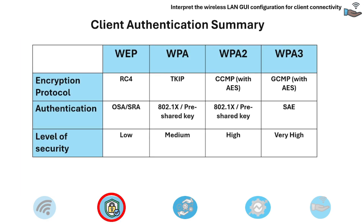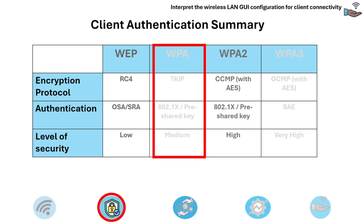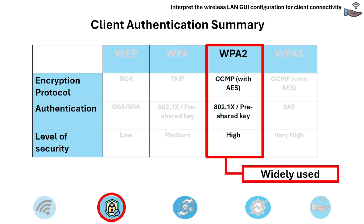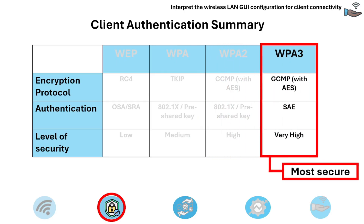Here is the client authentication method summary: WEP is obsolete, WPA2 is widely used, and WPA3 is the most secure option for modern wireless networks — especially given the increasing number of IoT devices and the need for robust security.